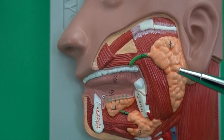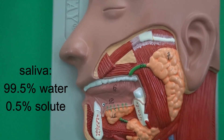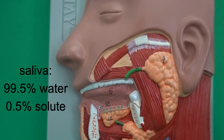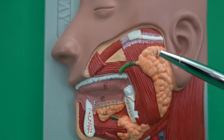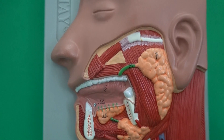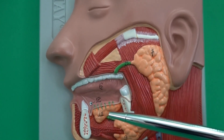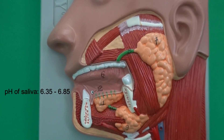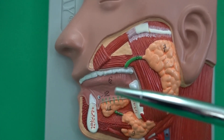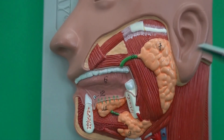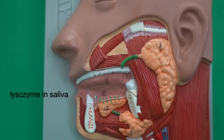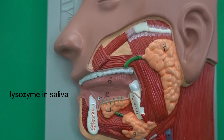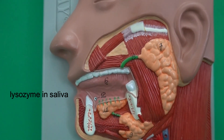In saliva, we find a very large amount of water — 99.5% of saliva is water and only 0.5% is solute. One of those solutes is buffers that help neutralize the pH, though the pH of saliva is slightly acidic in general. Another solute is the enzyme lysozyme, which can break down the cell wall of some bacteria and cause cytolysis of those bacteria.